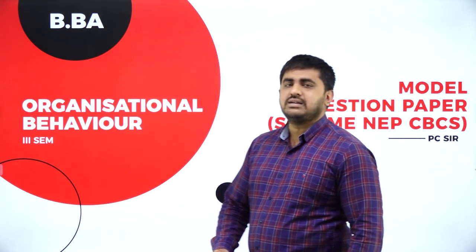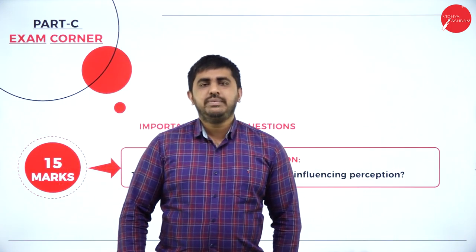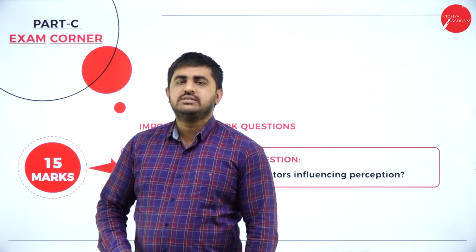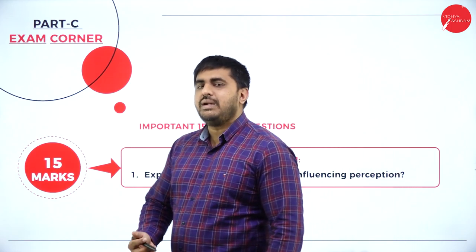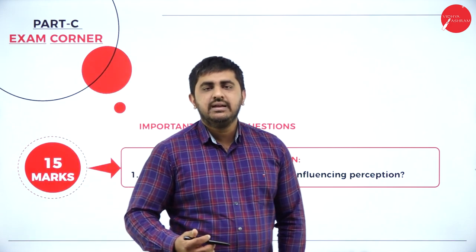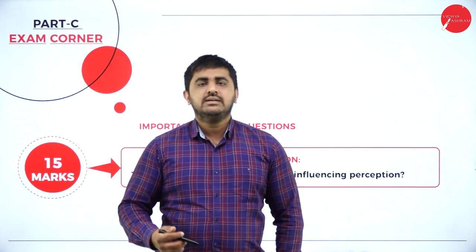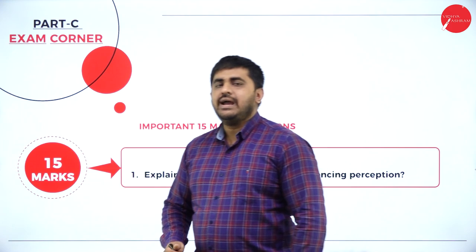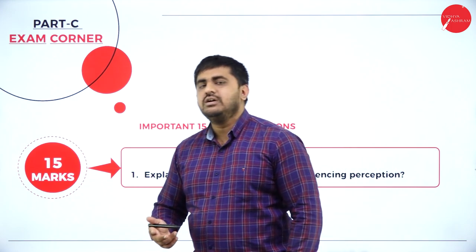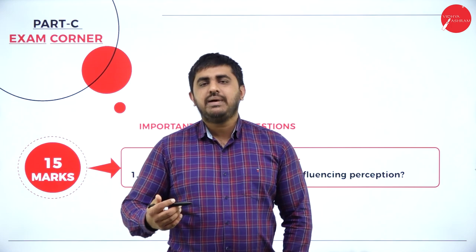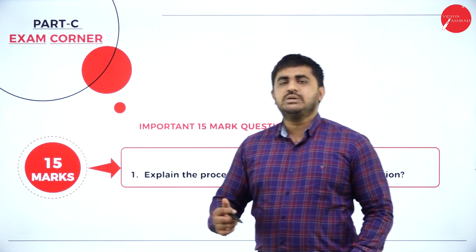We will start with 15 marks. Basically there will be three parts: Part A, Part B, and Part C. Part A is 2-mark questions — 7 questions will be asked, out of which you have to write 5, so Part A is for 10 marks. Part B: 4 questions of 10 marks each, out of which you write 2, that is 20 marks. Part C: 4 questions of 15 marks each, out of which you write any 2, so 30 marks. Total is 60 marks. This is the question paper pattern.